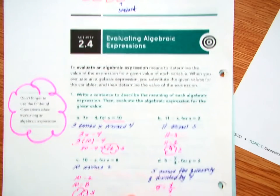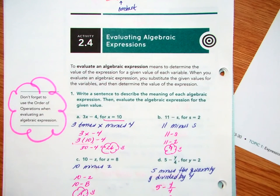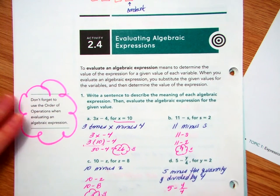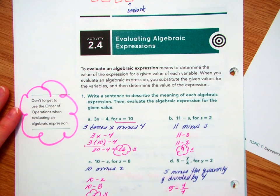That concludes Activity 2.4, Evaluating Algebraic Expressions. Remember that the evaluation is a simple substitution process. Well, if you didn't get that page in your interactive notebook while we were still here, I will try to get it to you as soon as possible when we return. Thank you.